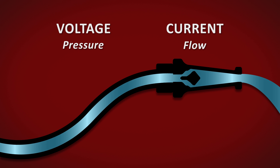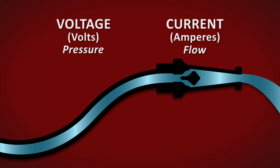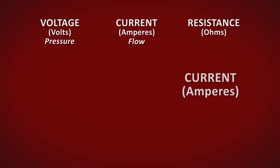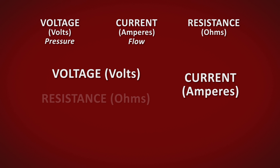Electrical current is measured in amperes. We can calculate the current flowing in a particular circuit if we know the voltage and the total resistance.